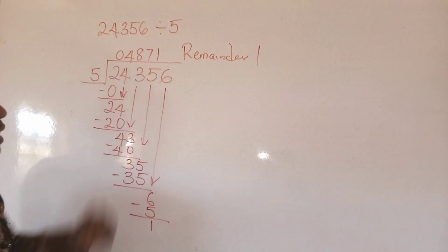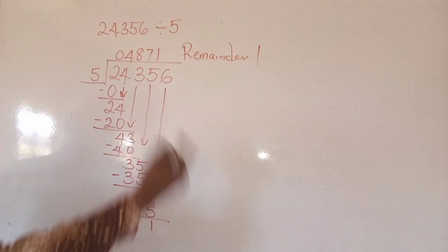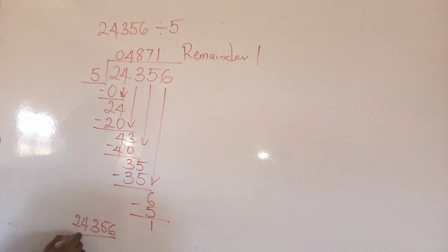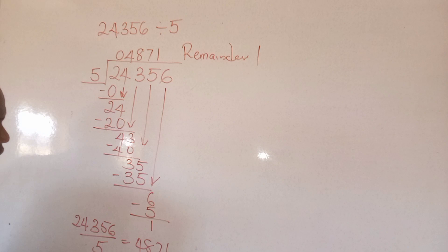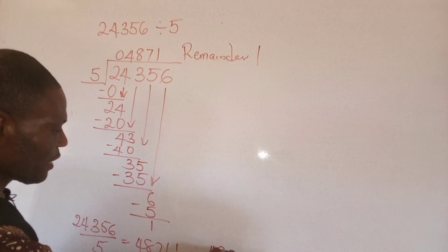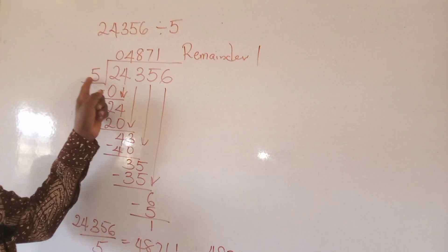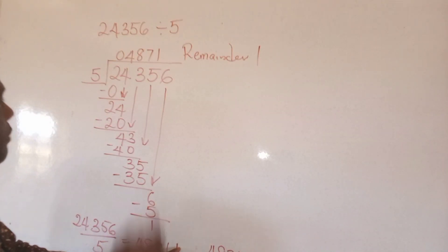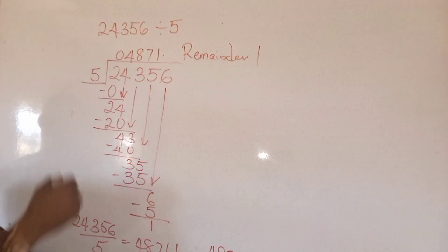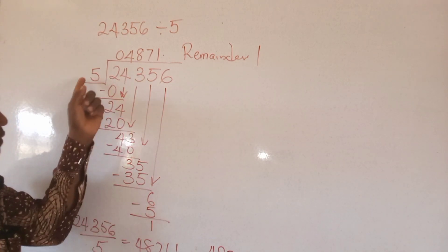If I wish to make it as a decimal, it's a different ballgame. That means 24,356 divided by five gives four thousand eight hundred and seventy-one, with a remainder of one. So the answer in decimal is four thousand eight hundred and seventy-one point two, because we add a zero to the remainder, making ten, and ten divided by five gives just two.